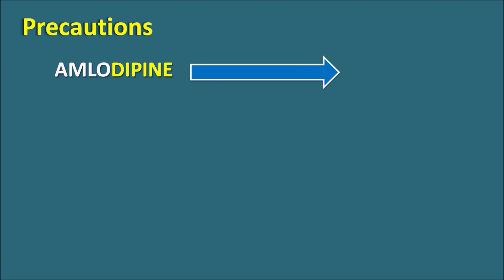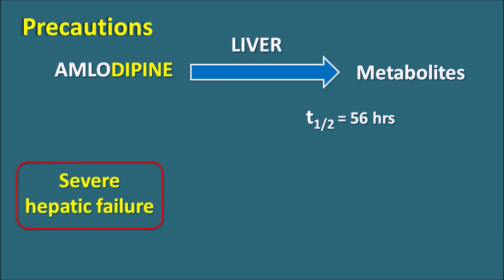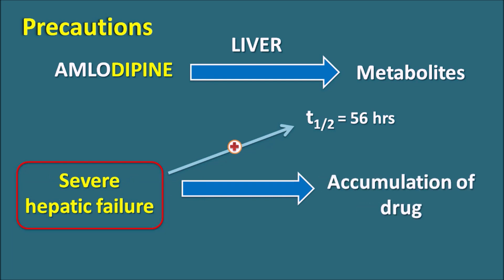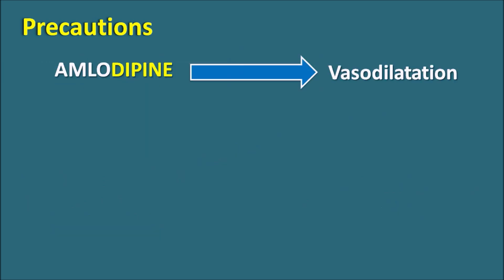A second precaution: amlodipine is converted to metabolites within the liver. This drug is long-acting with a half-life of 56 hours. In patients with severe hepatic failure, metabolism may be impaired, resulting in increased half-life and accumulation of amlodipine in the plasma, which should be carefully monitored. A third precaution: amlodipine produces vasodilation and thereby hypotension. Symptoms of hypotension like flushing, dizziness, and headache should be carefully monitored.